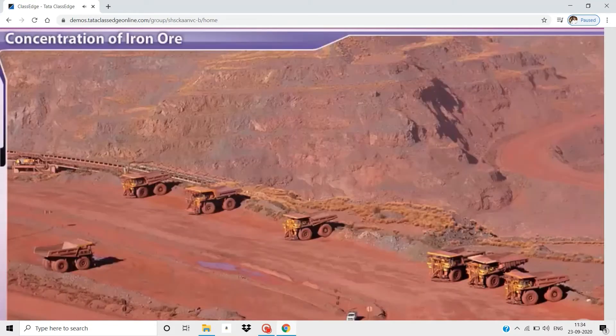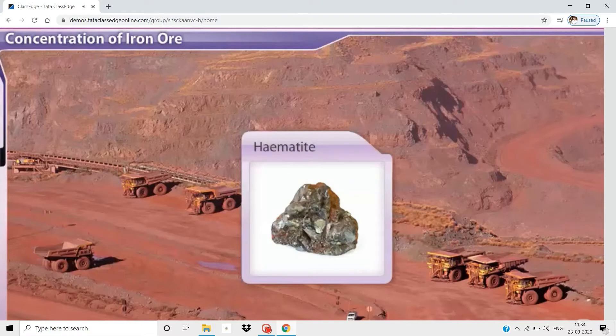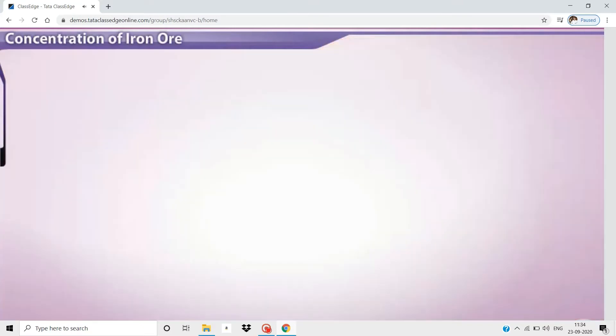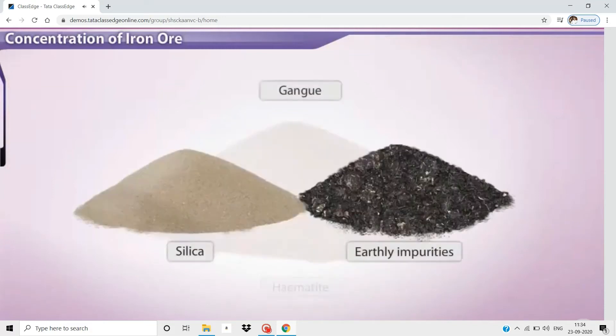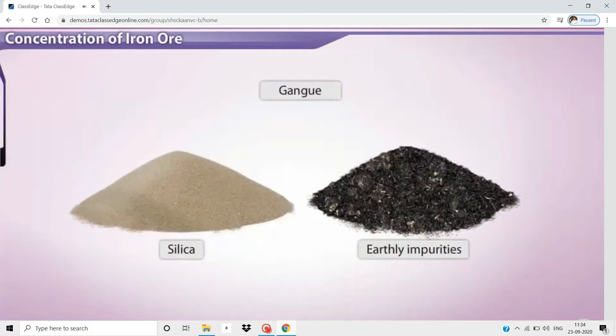Iron is mainly extracted from its principal ore, hematite. Ore obtained from the mine contains gangue, which largely consists of silica and earthly impurities. The light, earthly impurities are removed in the first stage of extraction: concentration. Let us see how this happens.